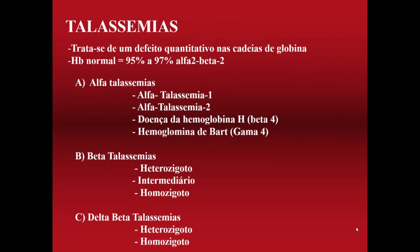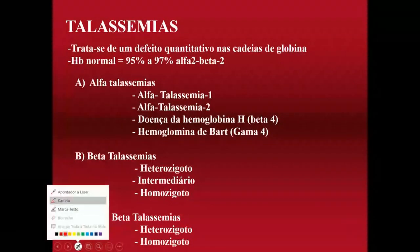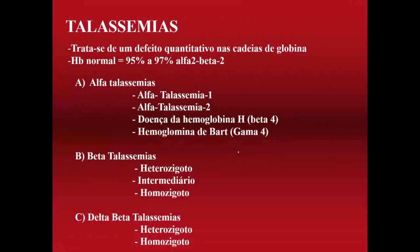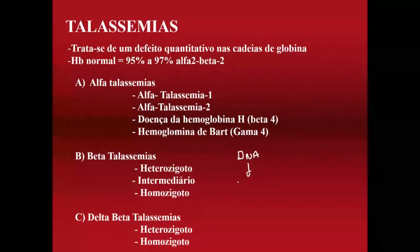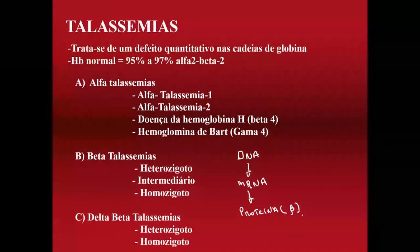As talassemias beta podem ser divididas em heterozigoto, intermediário e homozigoto. Eu tenho dois genes que codificam para a hemoglobina beta. Por alguma razão, esses genes não vão se transformar em proteínas. Sabemos que a função do DNA é fazer um RNA mensageiro, e esse RNA mensageiro tem que se transformar em uma proteína — no caso, a globina beta.